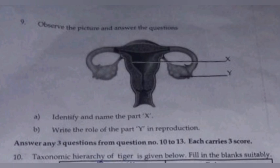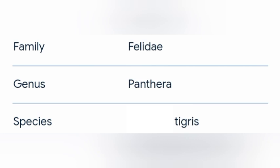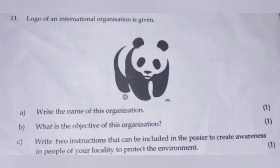The taxonomical hierarchy of tiger is given below. Fill in the blanks suitably. Answer: Domain Eukarya, Kingdom Animalia, Phylum Chordata, Class Mammalia, Order Carnivora, Family Felidae, Genus Panthera, Species tigris.